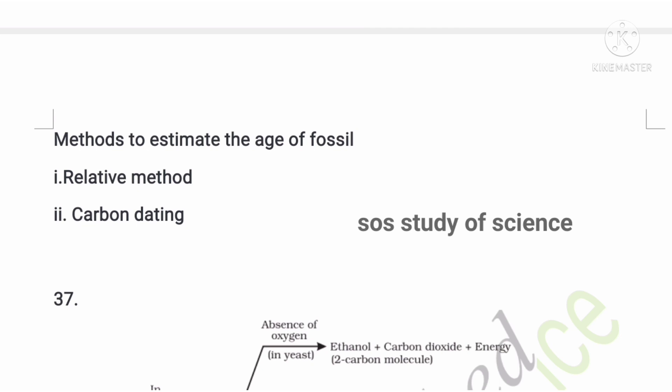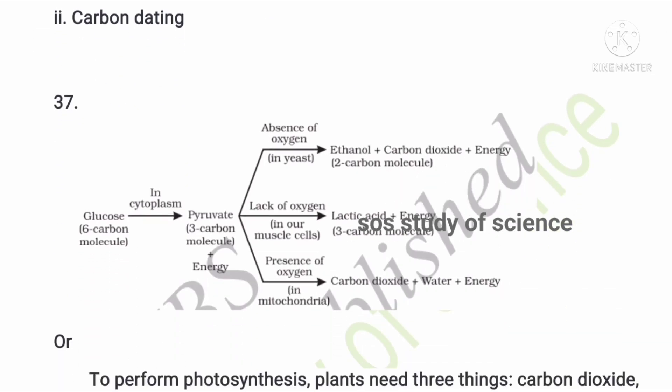The thirty-seventh question asks which molecule is formed during the first step of respiration by breakdown of glucose in the cytoplasm — the answer is pyruvate. The types of respiration are aerobic and anaerobic respiration. The differences: aerobic respiration takes place in the presence of oxygen, while anaerobic respiration takes place in the absence of oxygen.